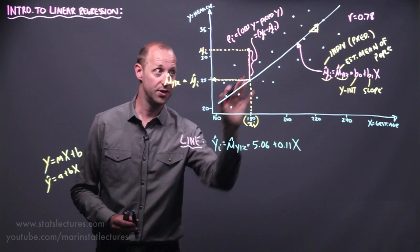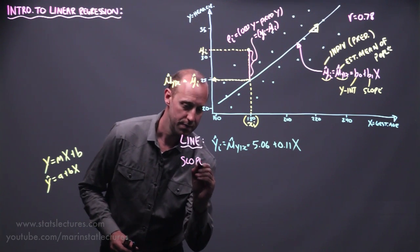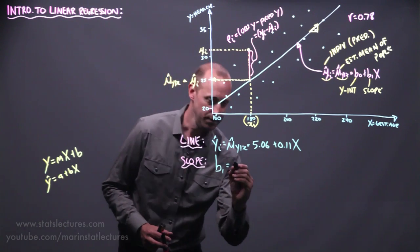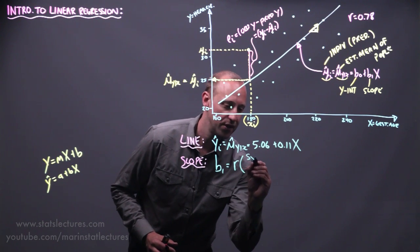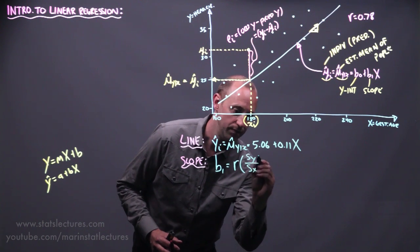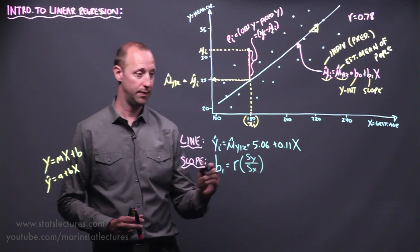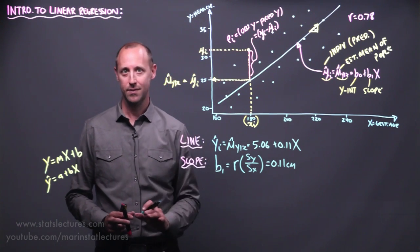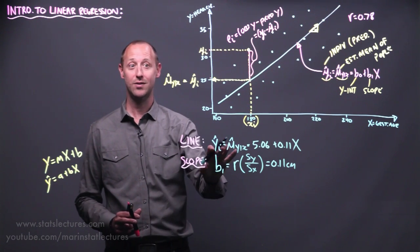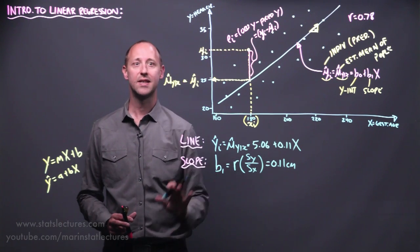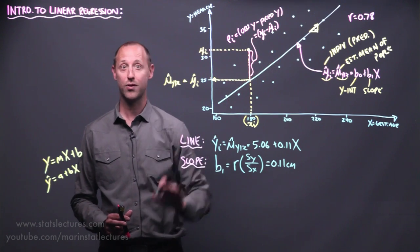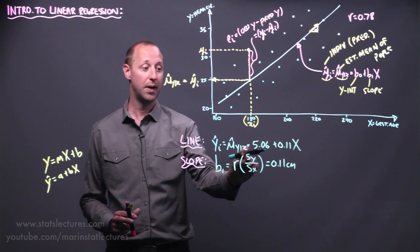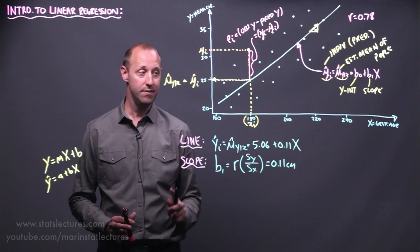Now let's talk about the slope and intercept for this line. The slope b1, in terms of a formula, comes out to be the correlation times the standard deviation of the y values over the standard deviation of the x values — which came out to be 0.11 centimeters. We don't want to focus on plugging into formulas, but this shows that the slope is essentially the correlation scaled by the standard deviation of y over the standard deviation of x, building in the units of x and y.